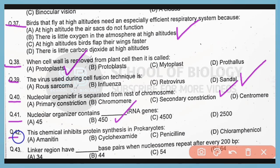Question number 42. Which chemical inhibits the protein synthesis in prokaryotes? So correct answer is option D. Chloramphenicol inhibits the protein synthesis in prokaryotes. Also remember that cyclohexamide is a chemical that inhibits protein synthesis in eukaryotes.